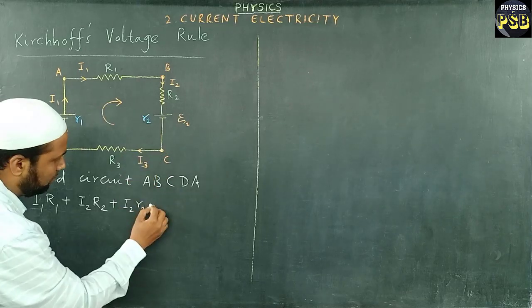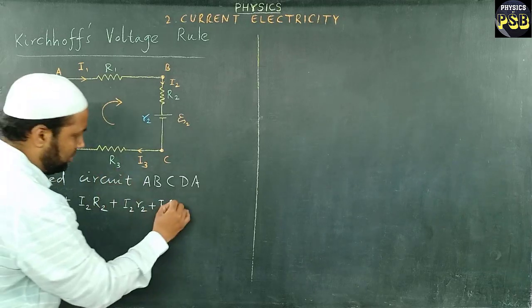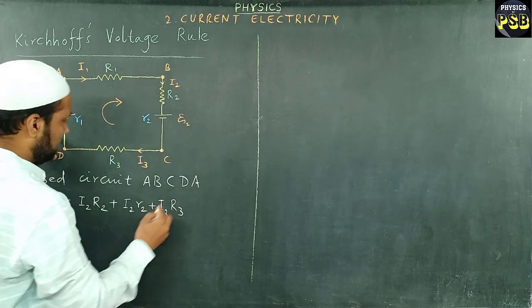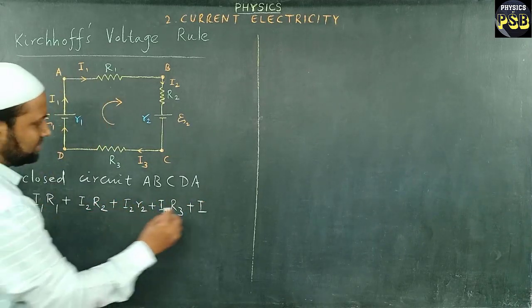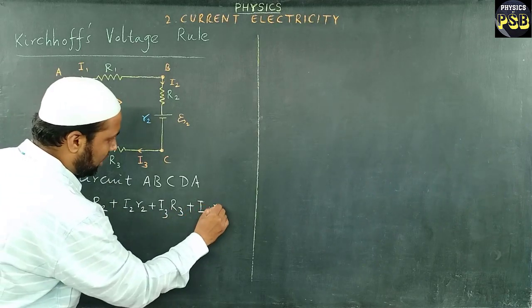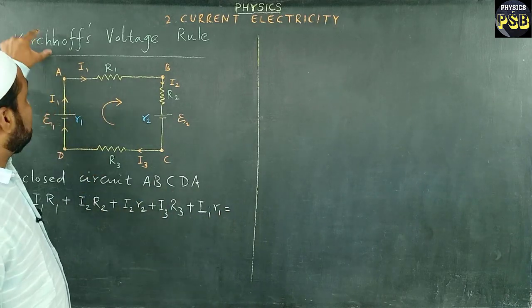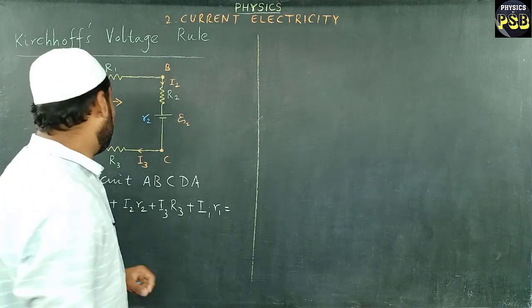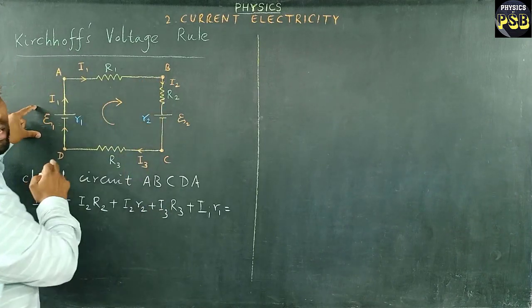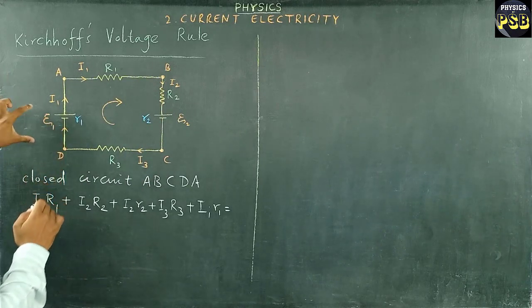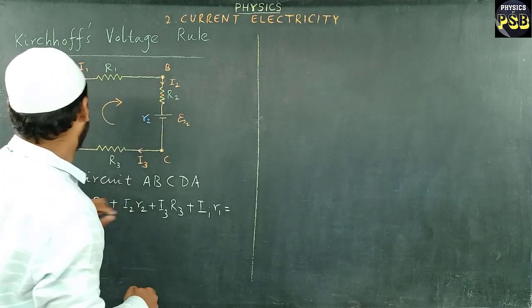Then I go ahead to point C. Here we have current I3 multiplied with R3. Then here, current I1 multiplied with R1. So we have one part. According to Kirchhoff's voltage rule, this will be equal to sum of EMF in the closed circuit. Here we have EMF Xi1 and Xi2.